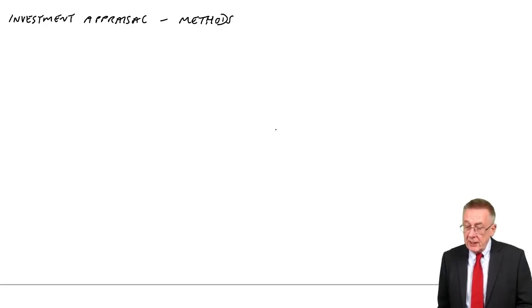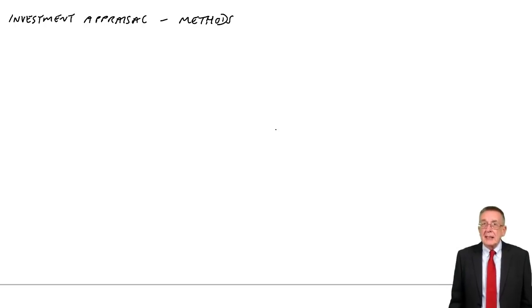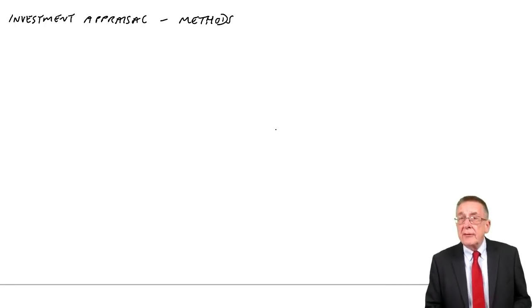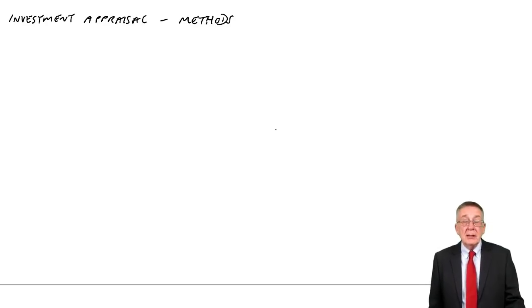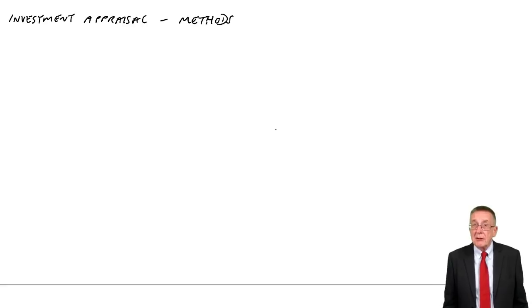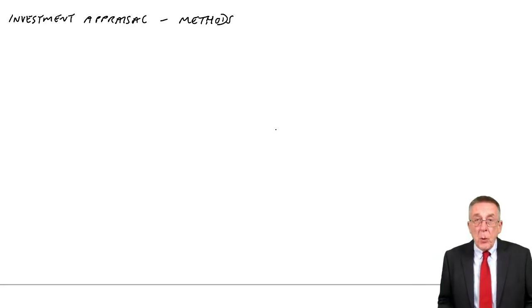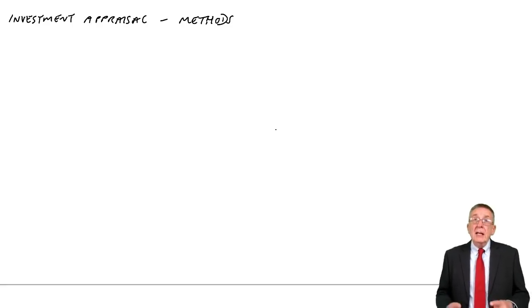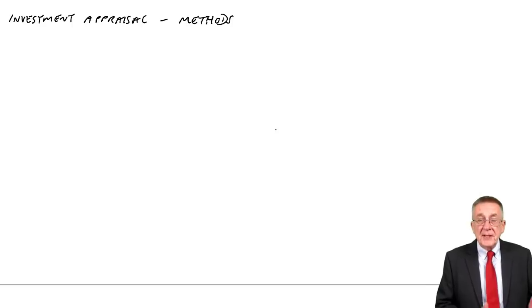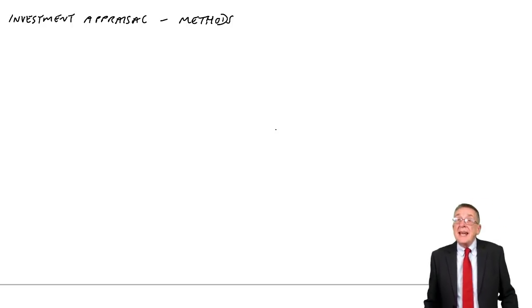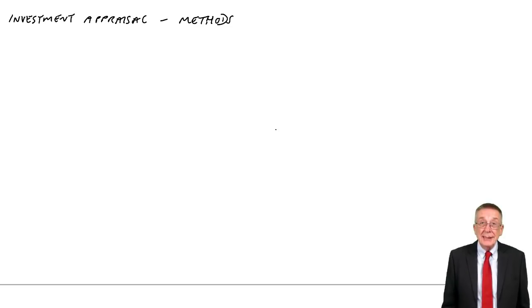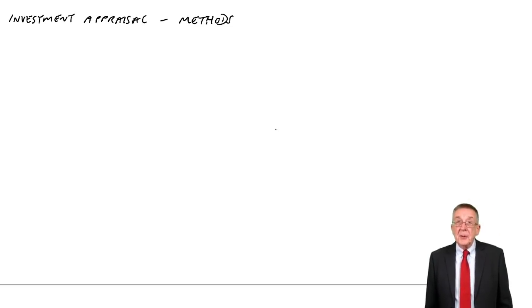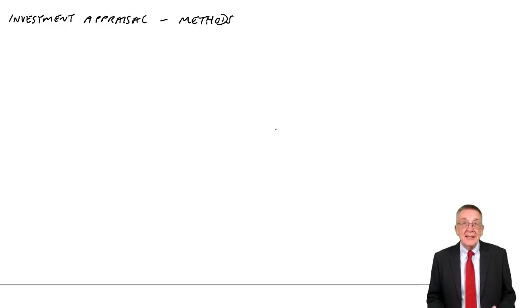Everything in this first chapter — the basic calculations — is revision from paper F2, so I shouldn't need to spend too long on it. There are three methods to be aware of, but by far the most important one is discounted cash flow. In this chapter I just want to go through the basic arithmetic for arriving at discounted cash flow, which is exactly the same as in paper F2. I'll explain as we go through where the extra difficulty comes in F9, which isn't the basic mechanics at all.